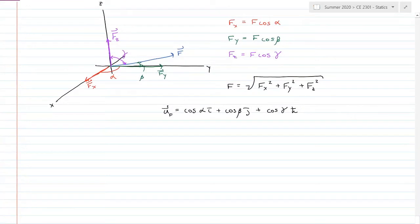For reference, just in case you need it, the magnitude of the unit vector equals 1, which equals the square root of cosine alpha squared plus cosine beta squared plus cosine gamma squared. That works in 2D as well.